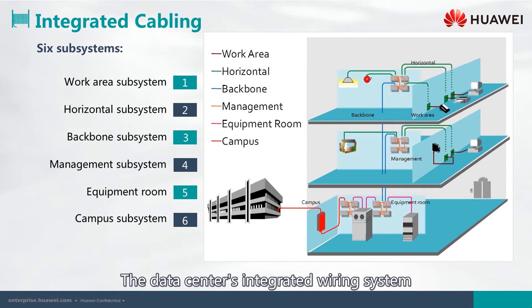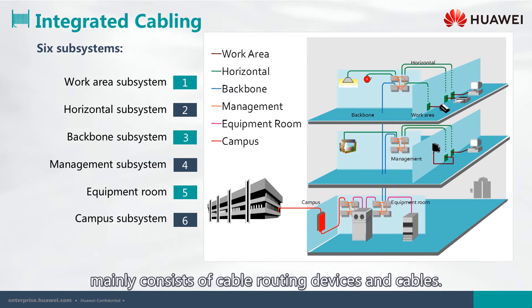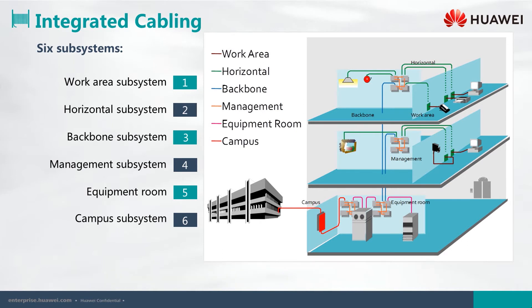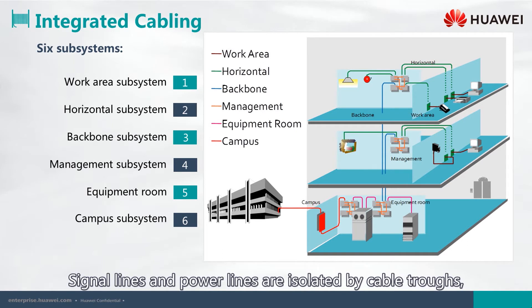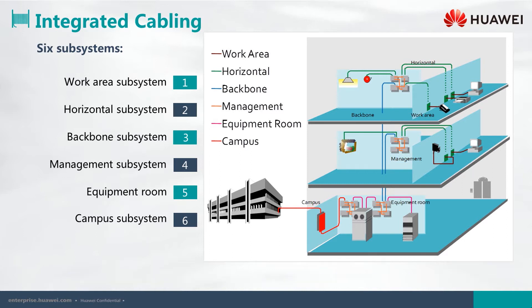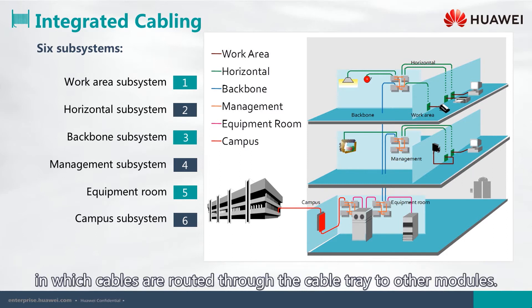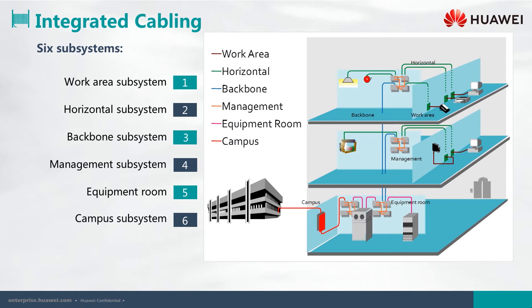The data center's integrated wiring system mainly consists of cable routing devices and cables. Signal lines and power lines are isolated by cable troughs, in which cables are routed through the cable tray to other modules.